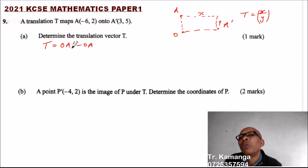Since we've been given the coordinates of A, we write OA in column form. OA' is (3, 5) and OA is (-6, 2).